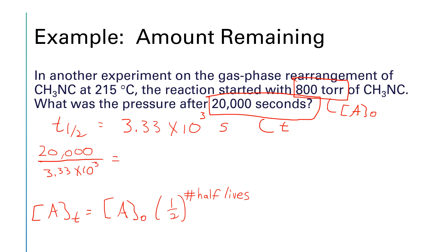So the number of half-lives will be that 20,000 seconds divided by the 3,330 seconds. That works out to be 6.00. So that's really right at 6 half-lives. So for A naught, we're going to plug in 800. And then we're going to multiply that by one half raised to the 6th power. So if I'm going to take 0.5 and raise that to the 6th power, and then multiply that times 800, I'm going to end up with a value of 12.5 Torr.